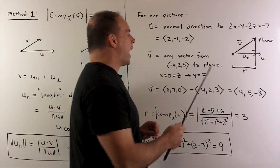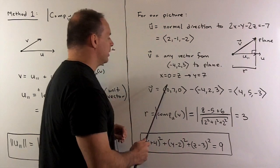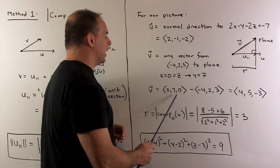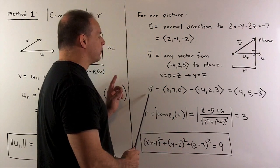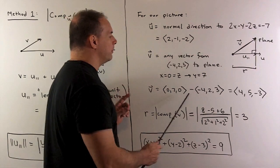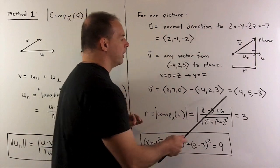It gives me y = 7, so I have the point (0, 7, 0) on the plane. I form my vector v by taking the difference of our point with the center, and we get our vector v.